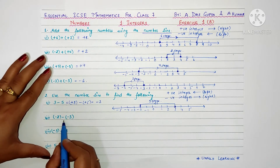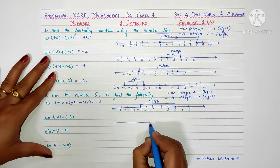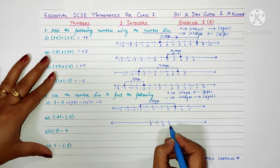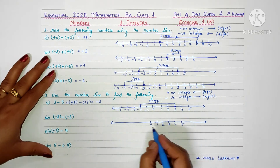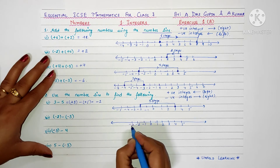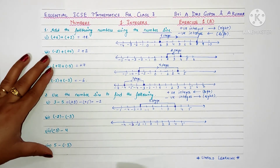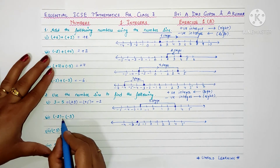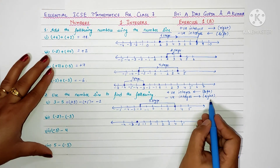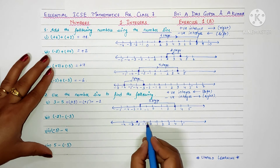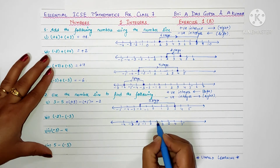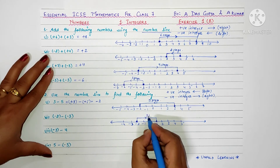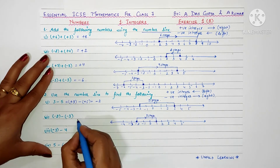Next question is minus two minus minus three. I will draw a number line and mark zero, one, two, three, four, five, minus one, minus two, minus three, minus four. We start at minus two. We are subtracting a negative integer, so we move towards the right — three steps: one, two, three. We moved three steps, so your answer is plus one.